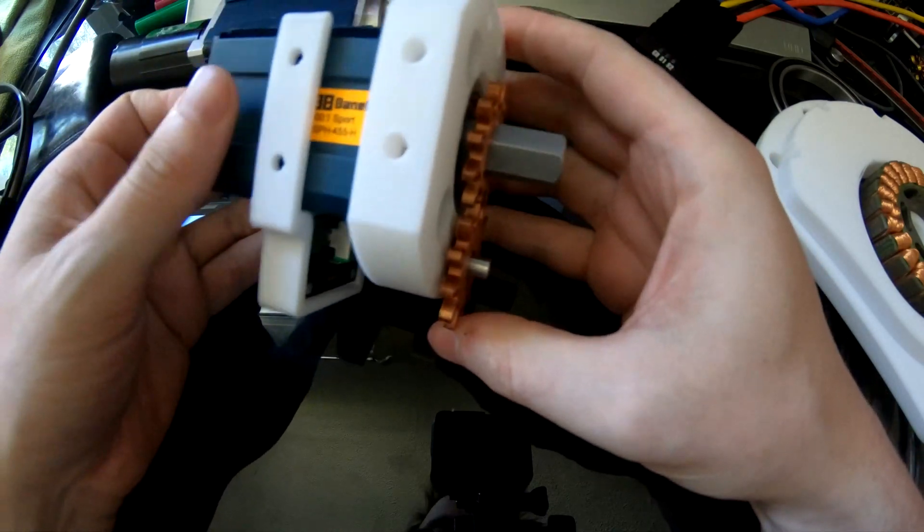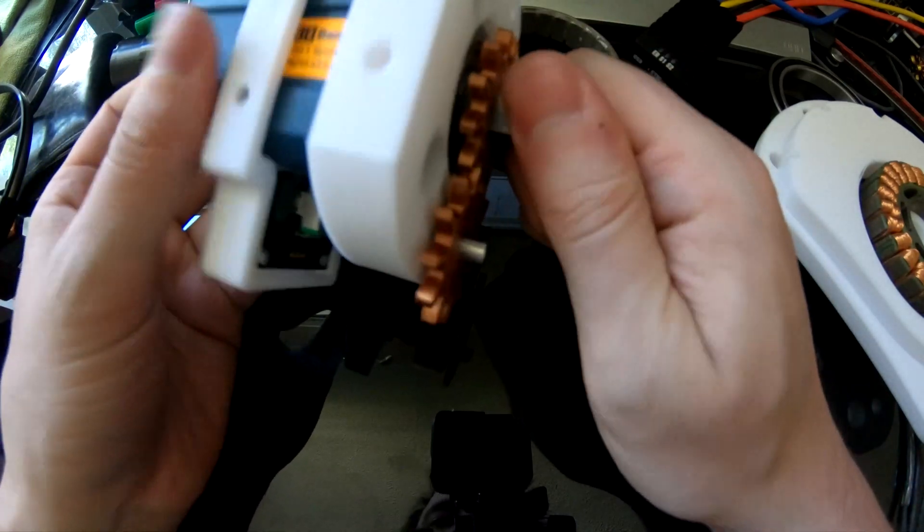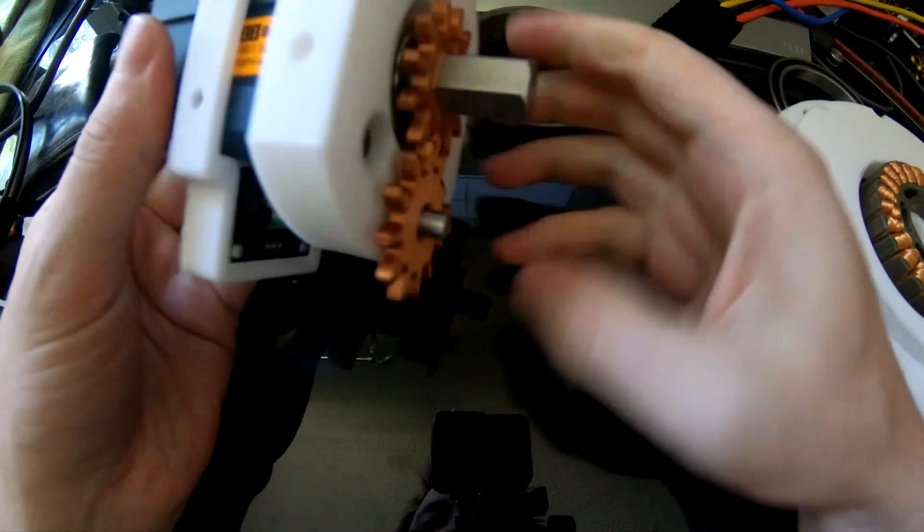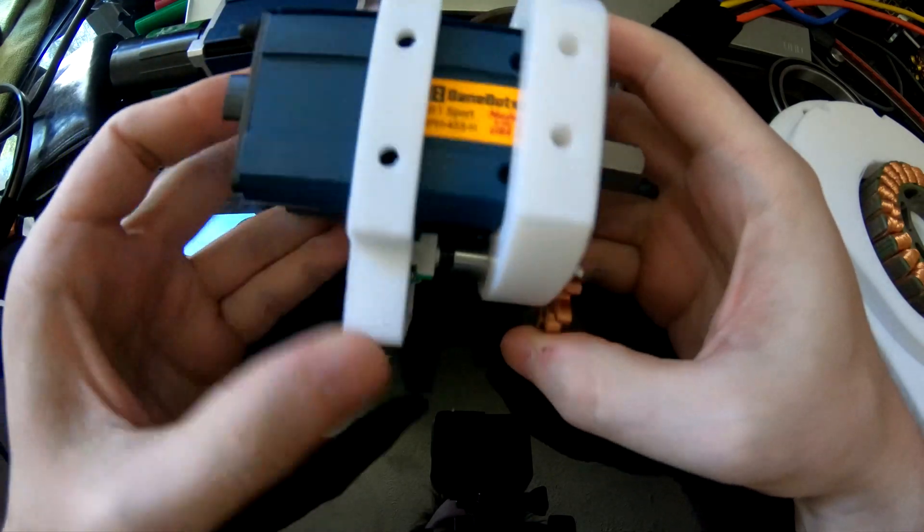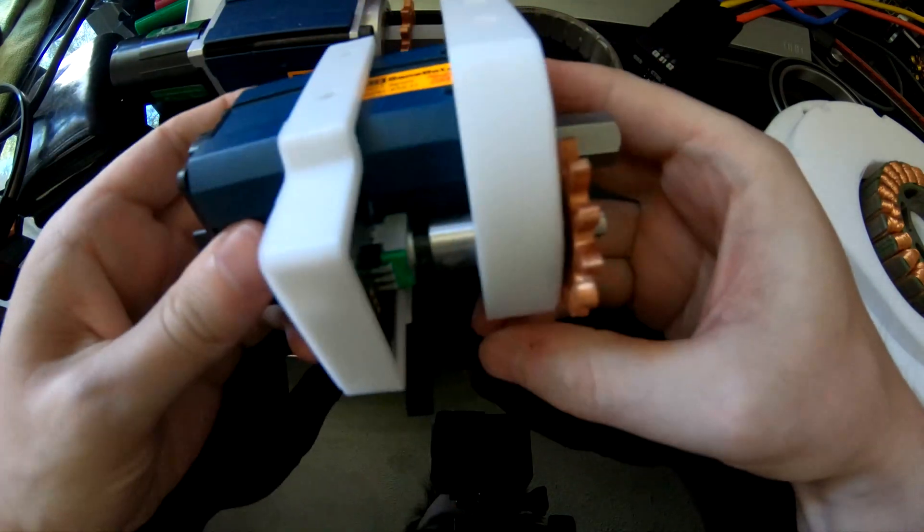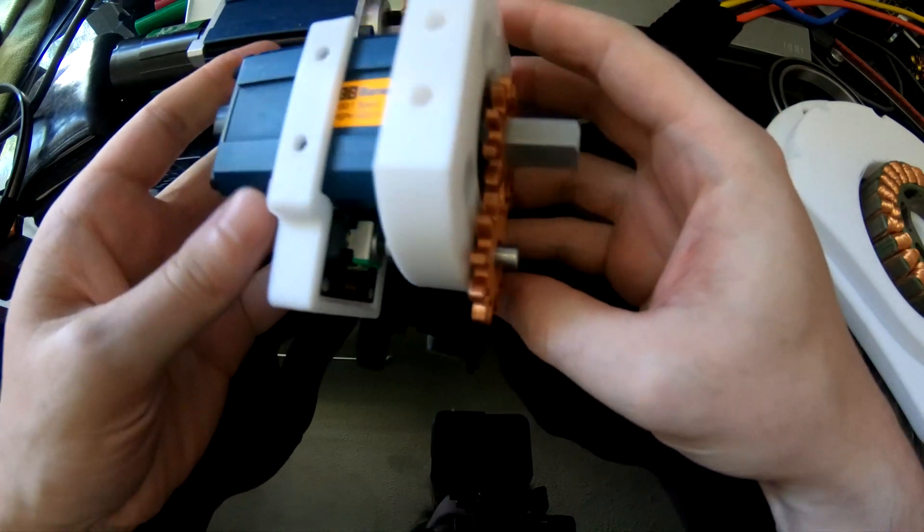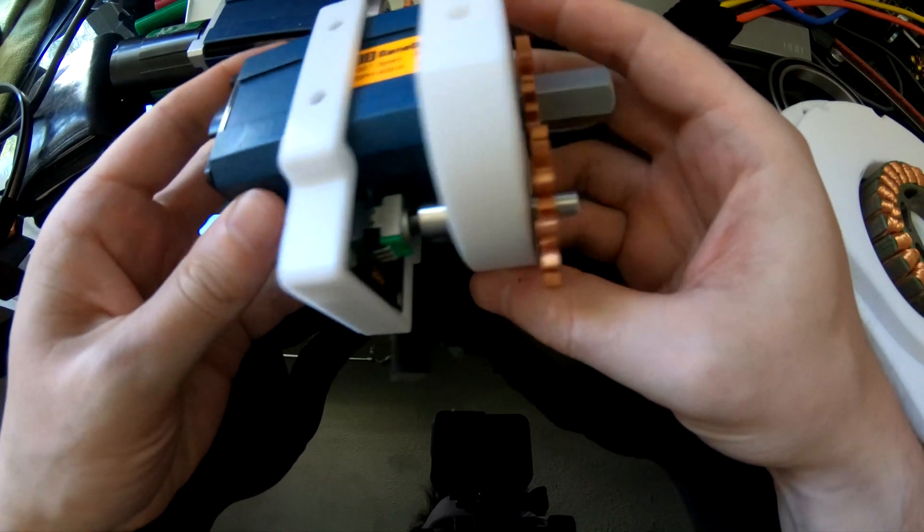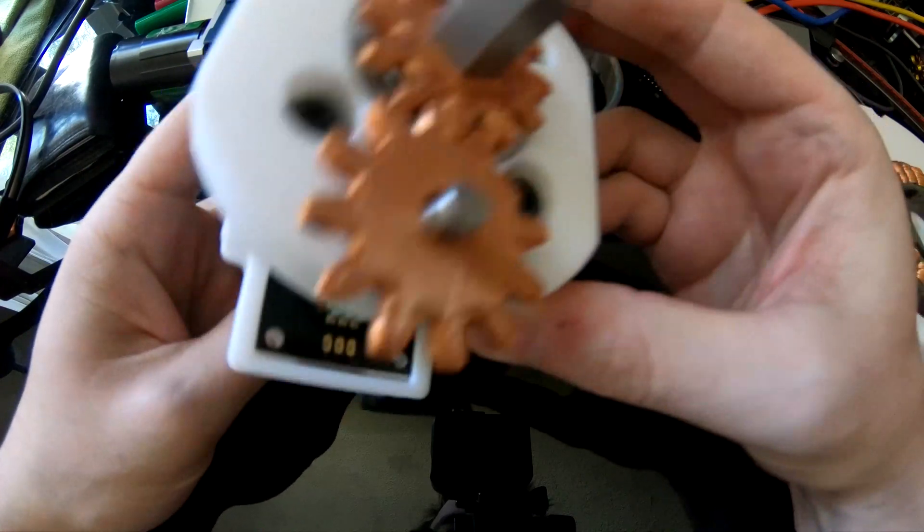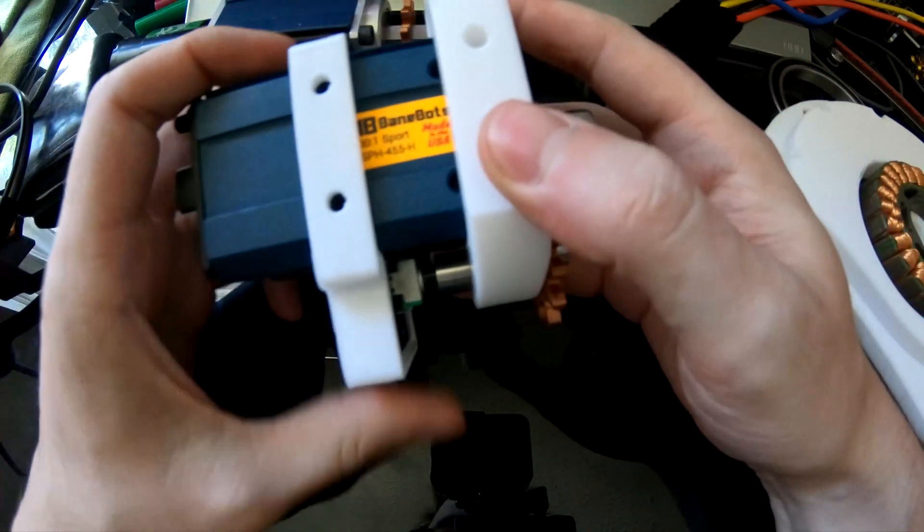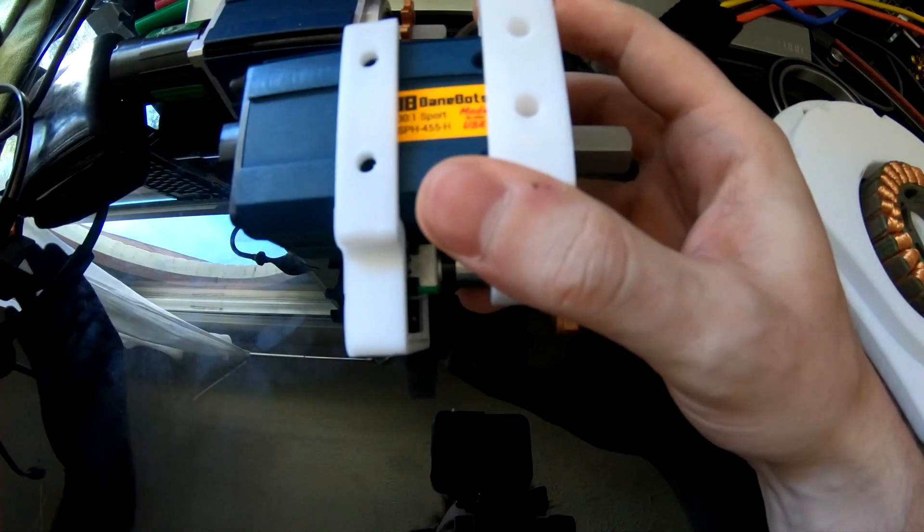This new gyro walker requires a really beefy servo. This time around we're using a Banebots planetary gearbox and we're rolling our own solution for the potentiometer. This is a Servo City potentiometer and we're 3D printing everything to see how well they fit.